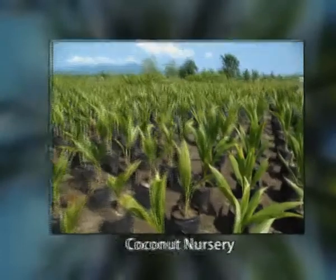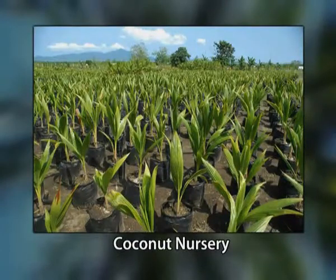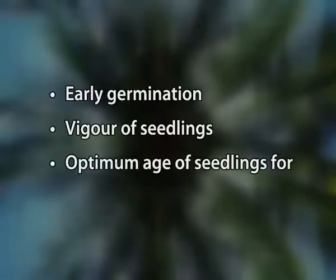Sixth, nursery technique. The practice of raising seedlings in the nursery for subsequent planting is essential because selection of seedlings is facilitated in the nursery. Seventh, selection of seedlings. It has been proved that seedling selection alone can increase yield by about ten percent. Selection of seedlings is done on the basis of certain characteristics like early germination, vigor of seedling, and optimum age of seedlings for transplantation.